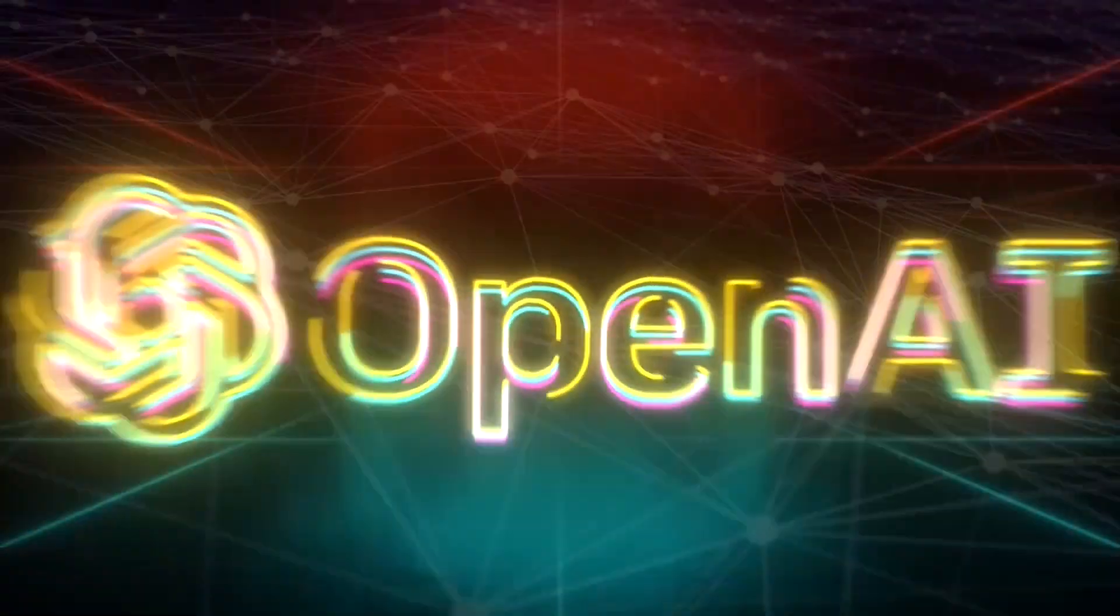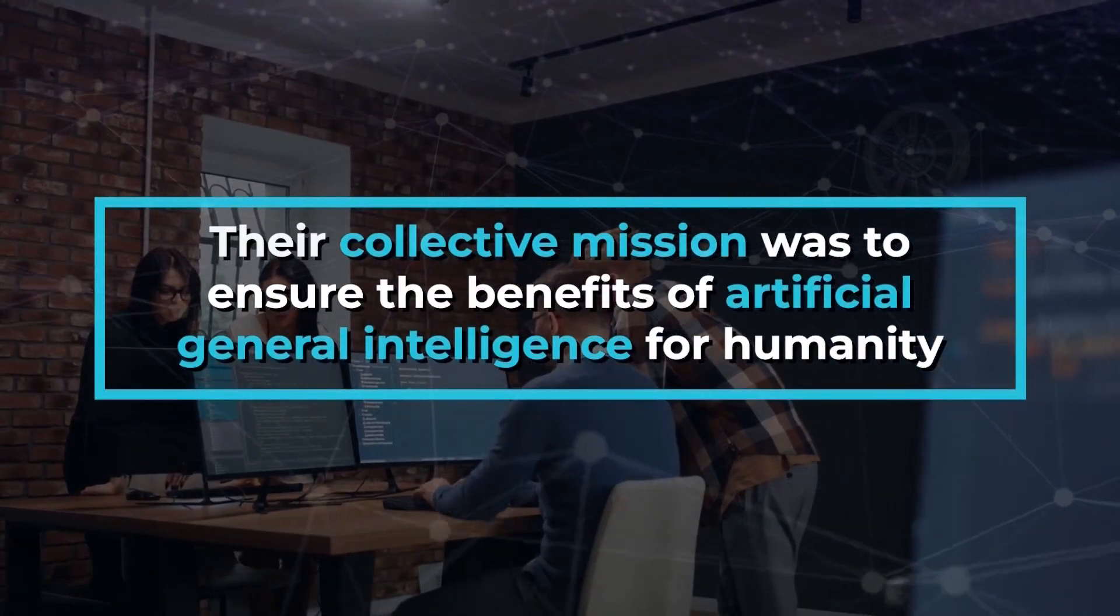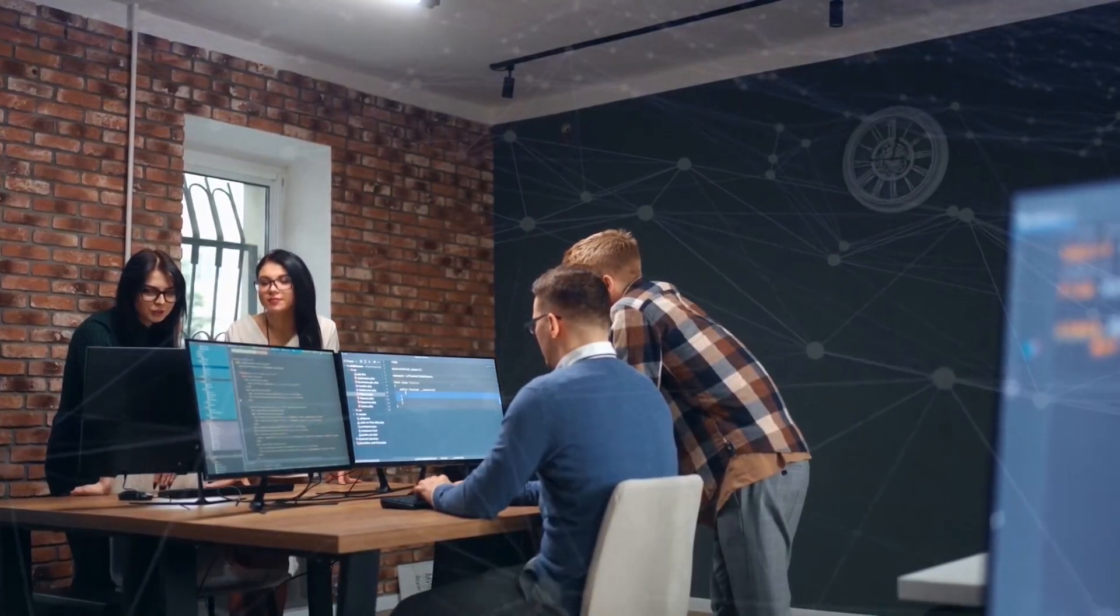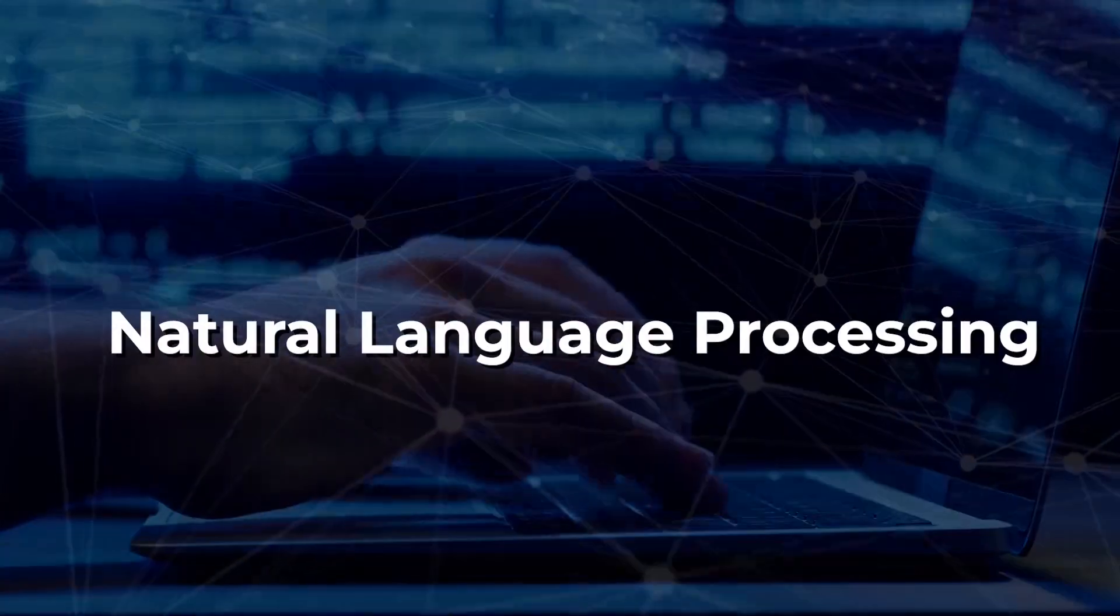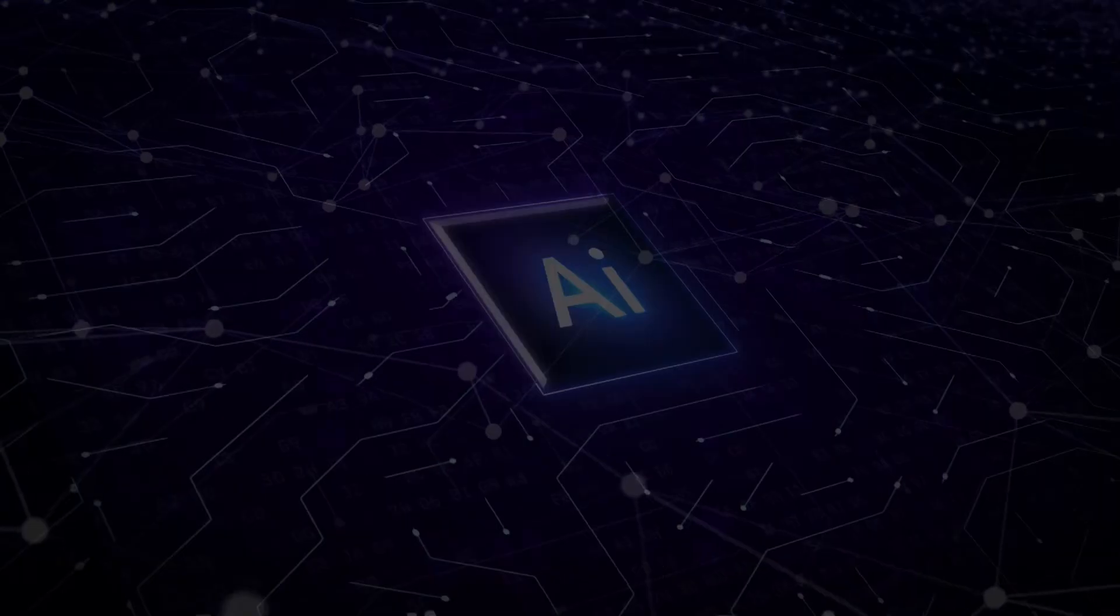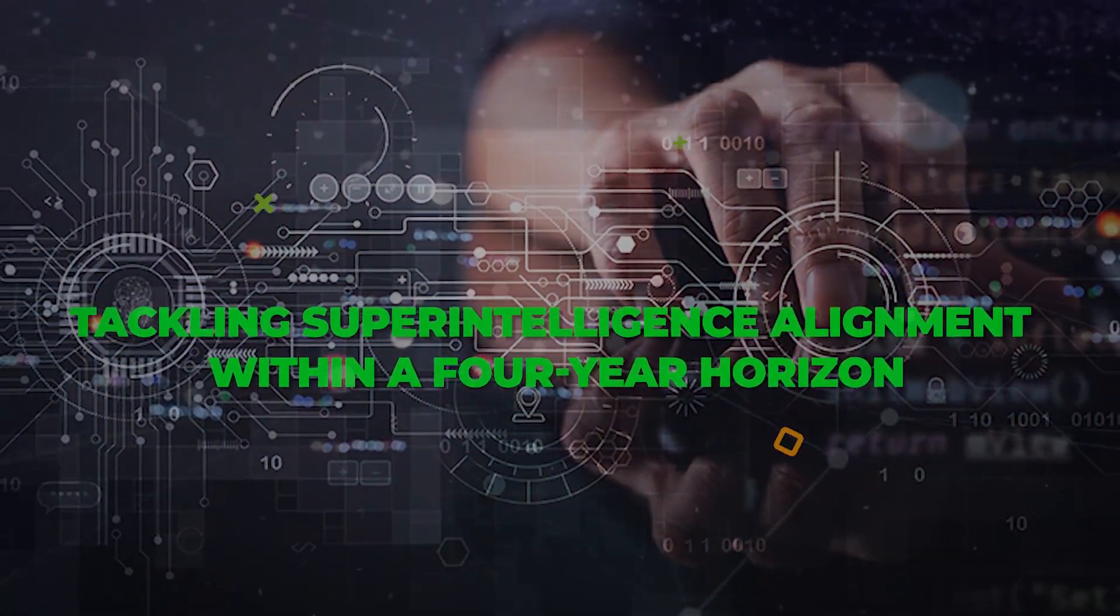In 2015, Tsutskever took his expertise to OpenAI, a research lab he co-founded with Elon Musk, Sam Altman, and others. Their collective mission was to ensure the benefits of artificial general intelligence for humanity. As chief scientist, his fingerprints are all over the revolutionary GPT models, pushing the limits of natural language processing. Notably, he recently unveiled the SuperAlignment Project, a bold initiative tackling superintelligence alignment within a four-year horizon.